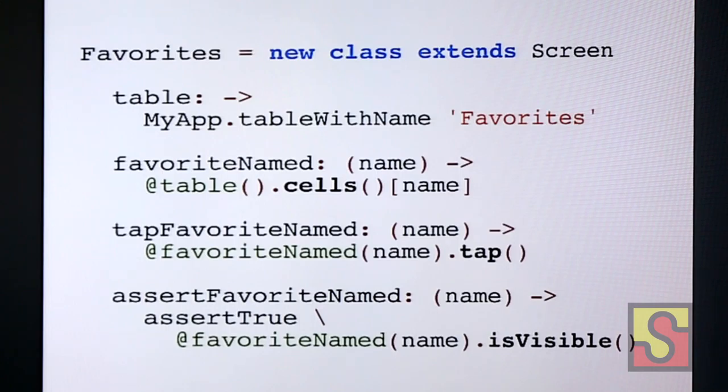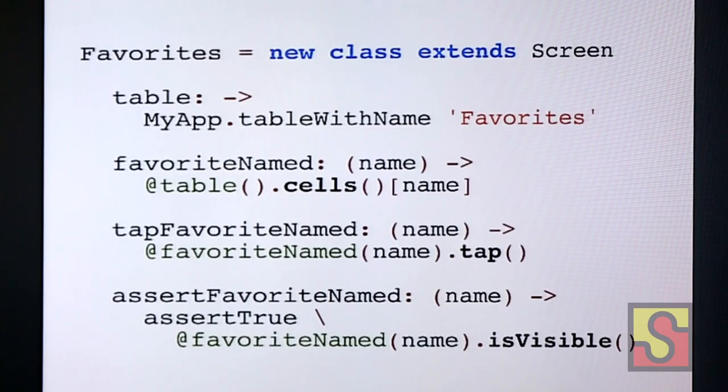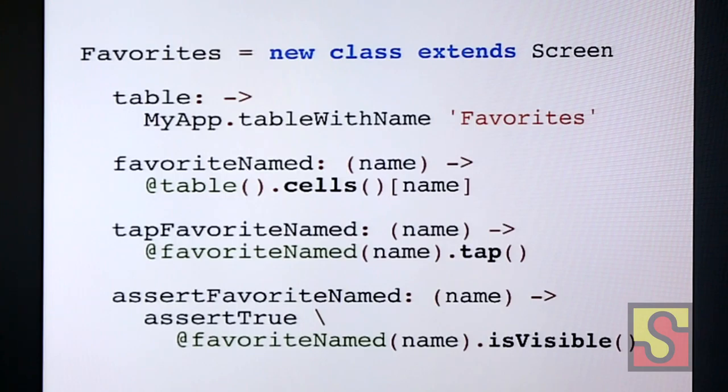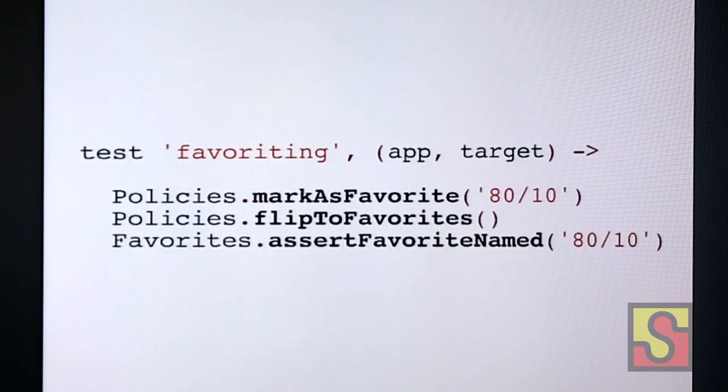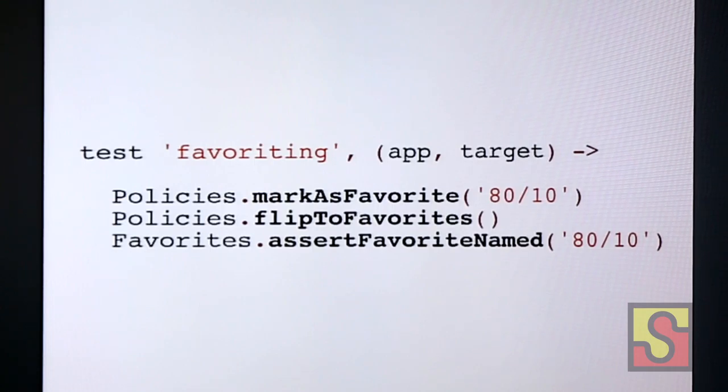So, what would it look like to use CoffeeScript with UI automation? Well, it would look something like this. We're going to define a singleton object. So, that top line is a bit difficult to parse. But we're going to instantiate an anonymous class that inherits from screen. And we're going to assign that to a variable called favorites. We capitalize F because it's a singleton. Why not? And then we have four methods on that favorites object. We have a table that calls out to my app, which is a global object maybe. And we have a favorite named, a tap favorite named, and an insert favorite named.